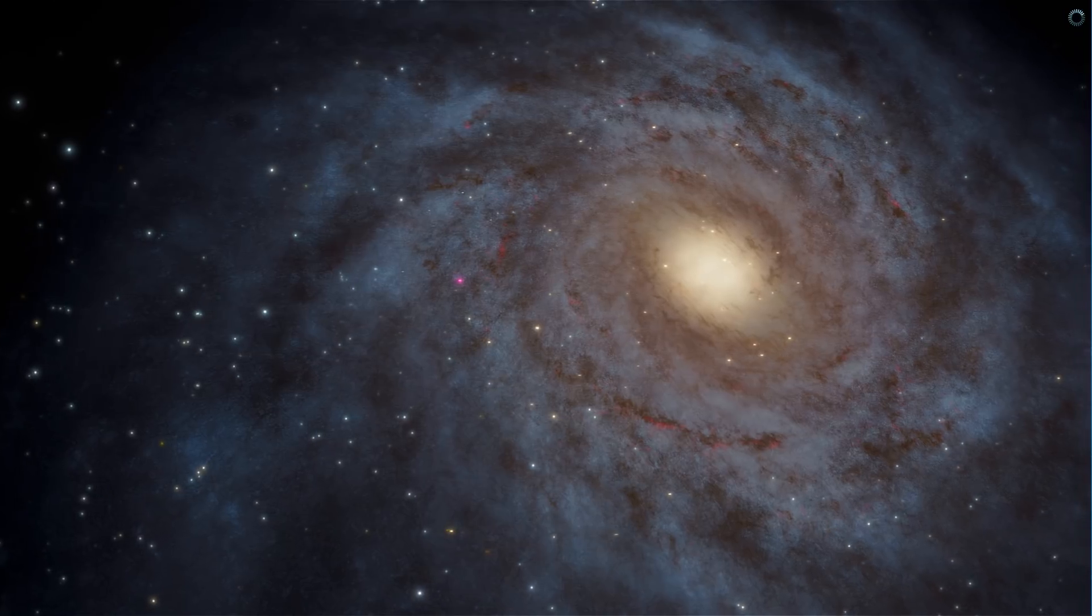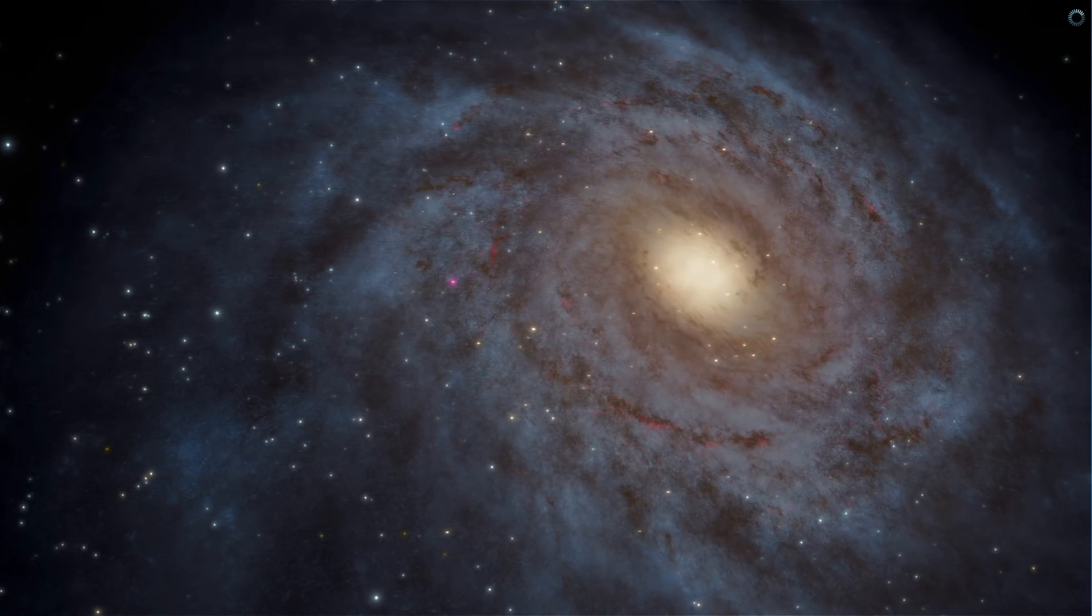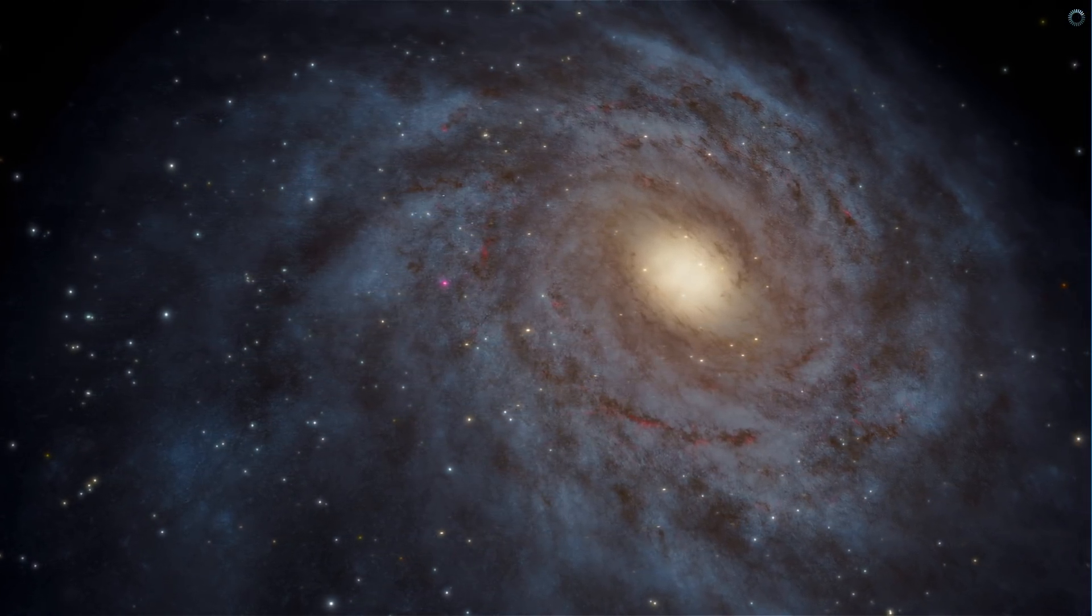And so imagine 3.8 billion years ago, a neutrino from this galaxy basically leaves and heads straight for Earth. Meanwhile, on Earth, scientists built a tremendously large neutrino detector underneath Antarctic ice. You can see it right here.